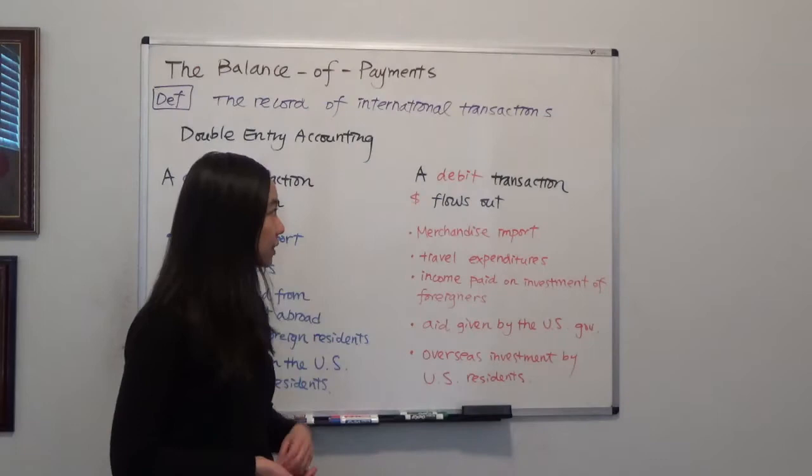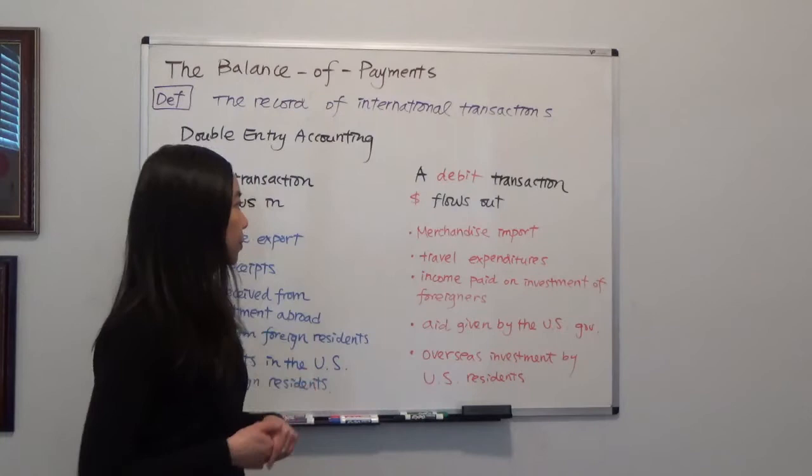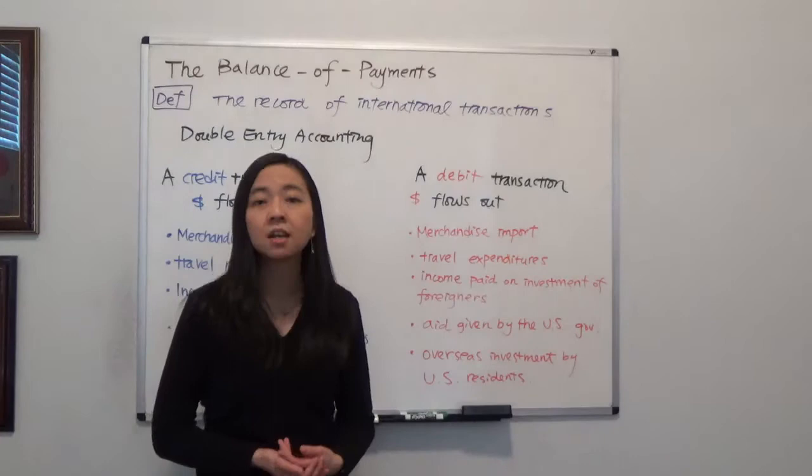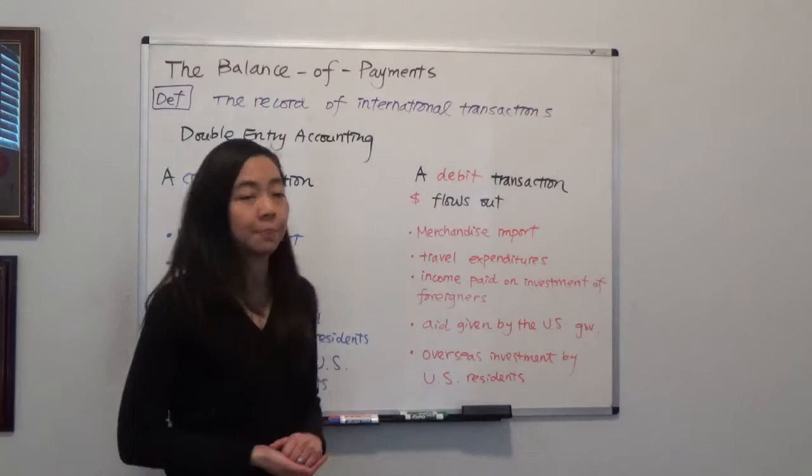Now, what about debit transactions — where money is flowing out from the US to a foreign country? The first example is merchandise import. For example, we're buying shoes and toys from China, and we have to pay for them. So the money flows out — that's a debit transaction.